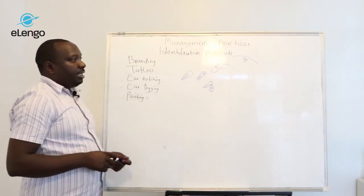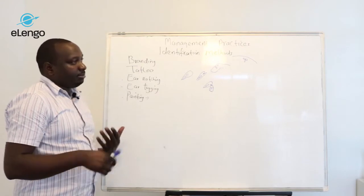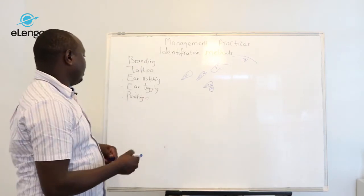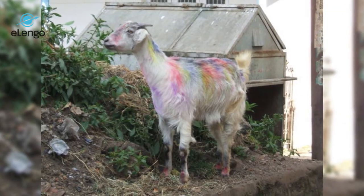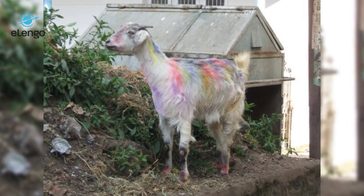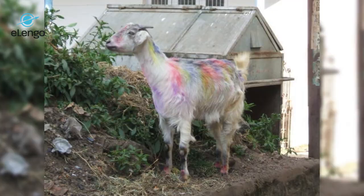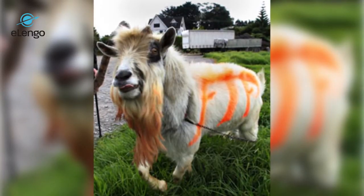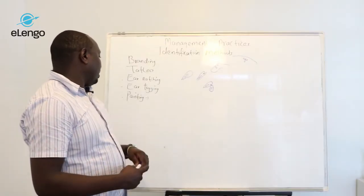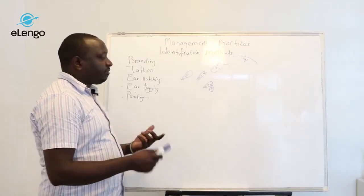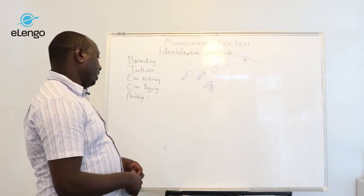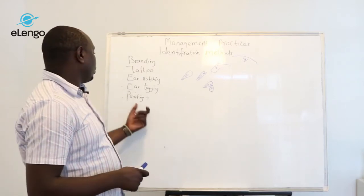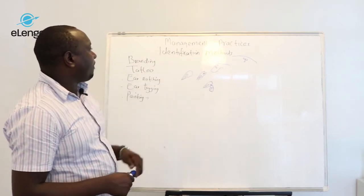Painting is another method. For example, if mating is taking place, painting can be done to know which animal has been served by which male. Painting can be done on the back or on the female to know whether mating has taken place or for identification purposes. Different colors can be employed to identify the herd.